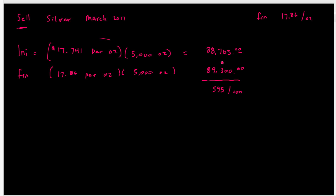Think about it this way: you entered a contract to sell 5,000 troy ounces at a set price. At the end of the contract the market value is higher, but because we're selling we're getting the lower locked-in price, not the higher market price. So we have a loss of $595 per contract. Times seven contracts, the total net loss is $4,165.